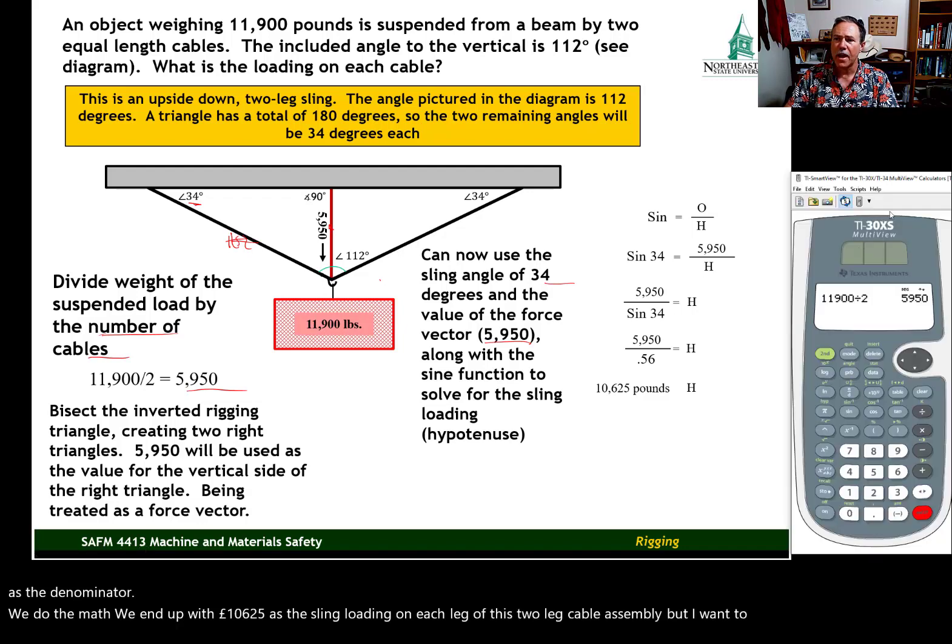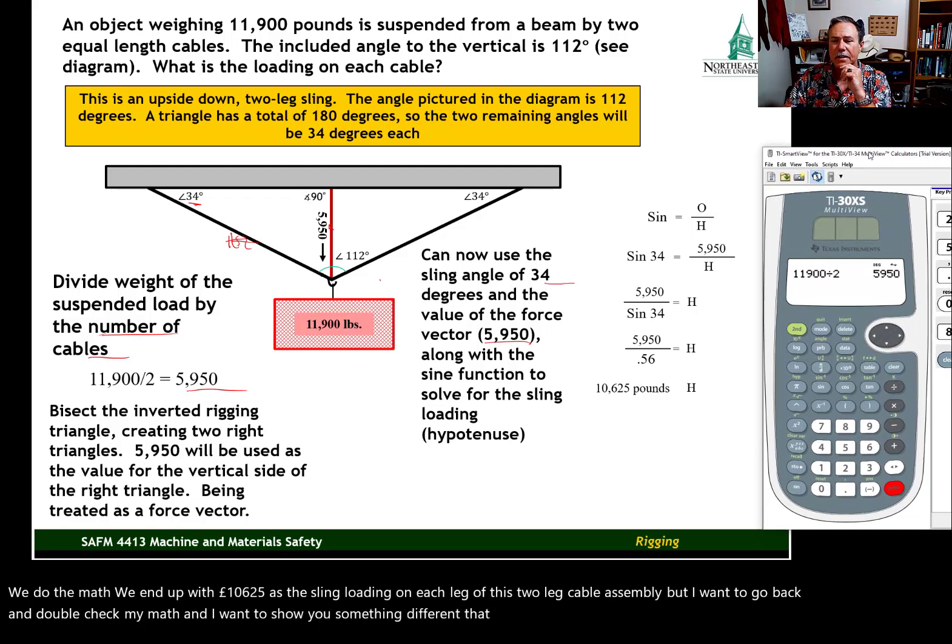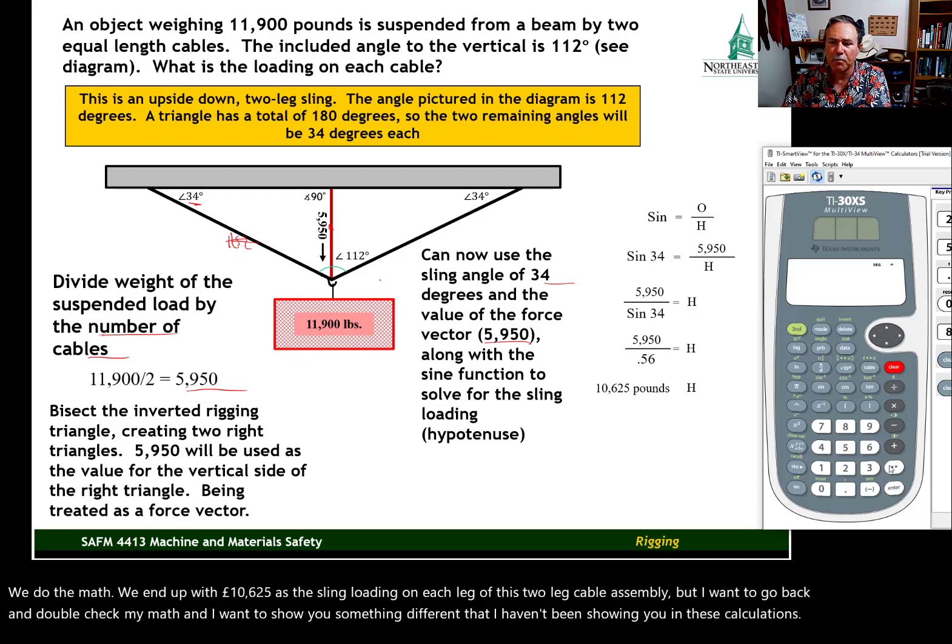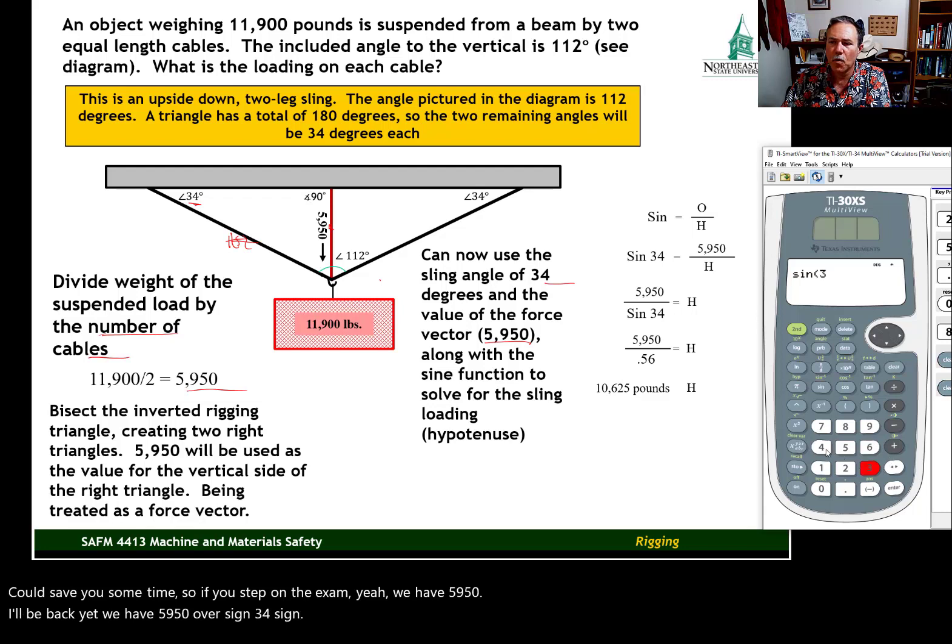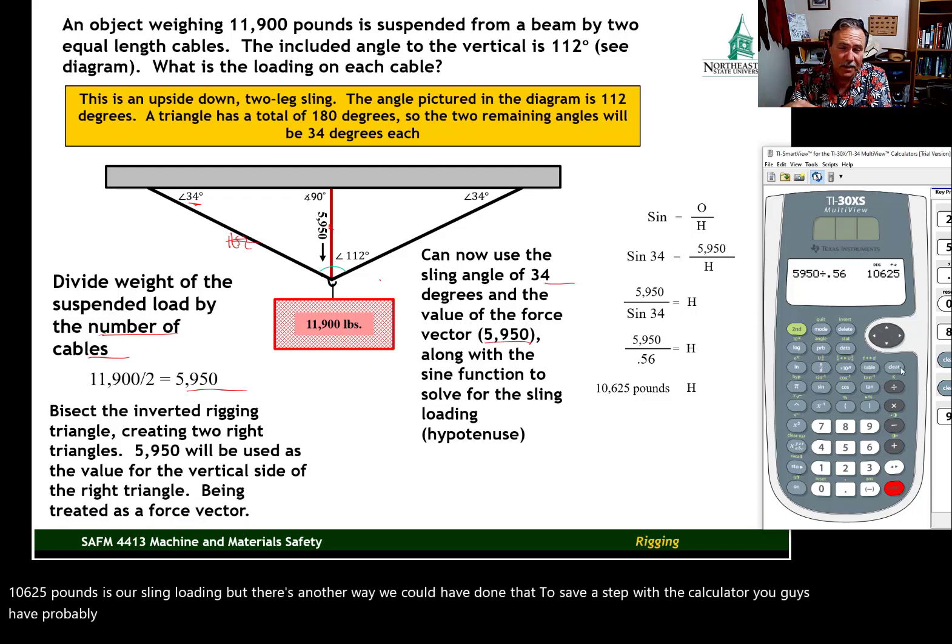But I want to go back and double check my math, and I want to show you something different that I haven't been showing you in these calculations. Could save you some time, save you a step on the exam. We have 5,950 over sine 34. Sine 34 equals 0.559, we'll call that 0.56. Take 5,950 divided by 0.56, 10,625 pounds as our sling loading. But there's another way we could have done that to save a step with a calculator. You guys have probably been yelling at the screen saying, Why has he done it that way? Well, I do it that way to show it to you step by step.